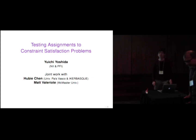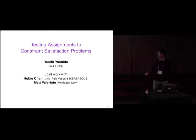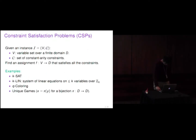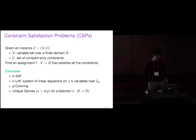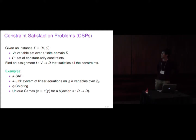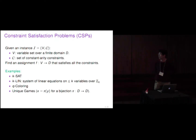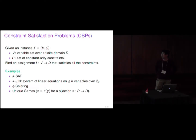Thanks for coming. This is the last talk of today. This is joint work with Fuby Chen and Matt Barillot. Let's start with the definition of constraint satisfaction problems. This is a very general problem: given an instance I consisting of variable set B and constraint set C, we want to find an assignment F that satisfies all the constraints. CSP can express many problems like k-SAT, systems of linear equations, coloring with Q colors, and unique games.